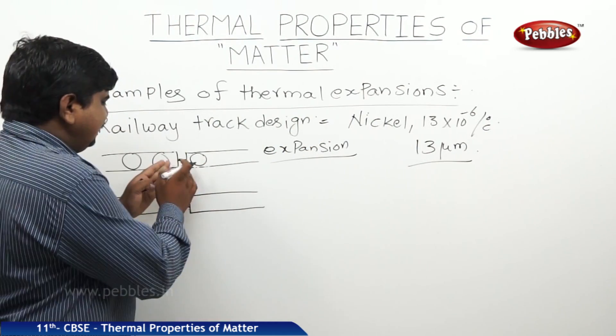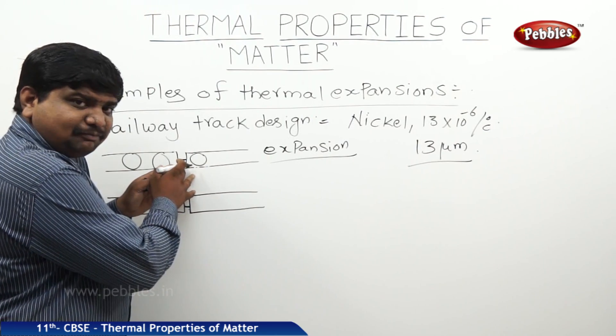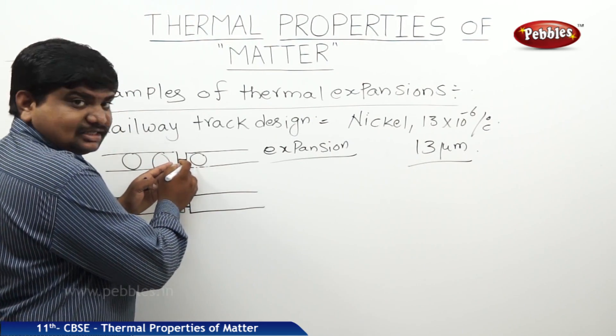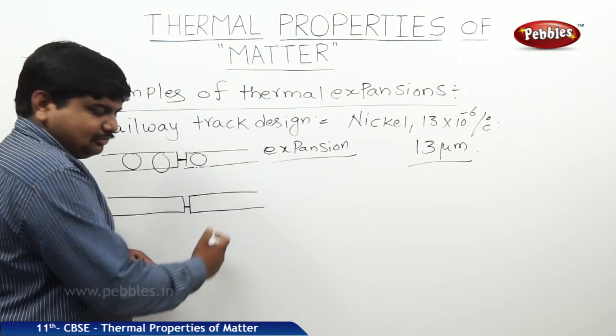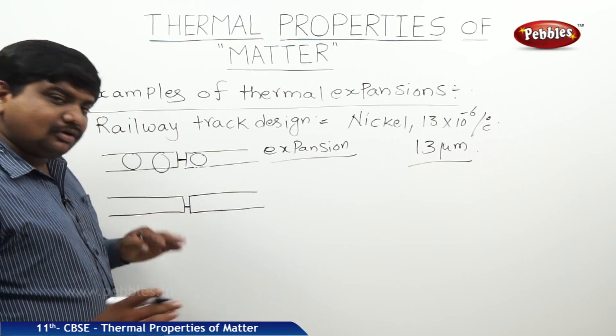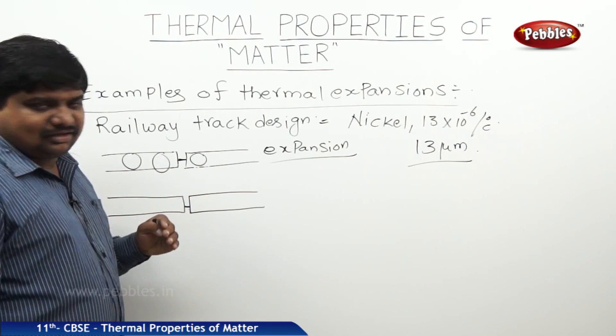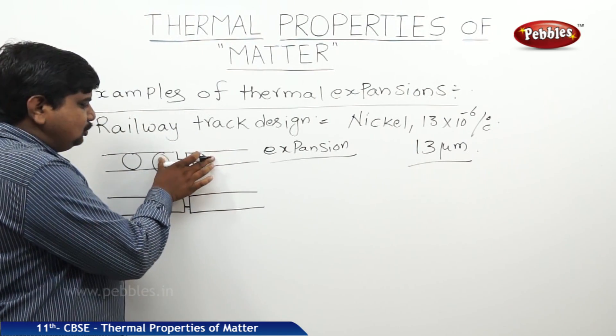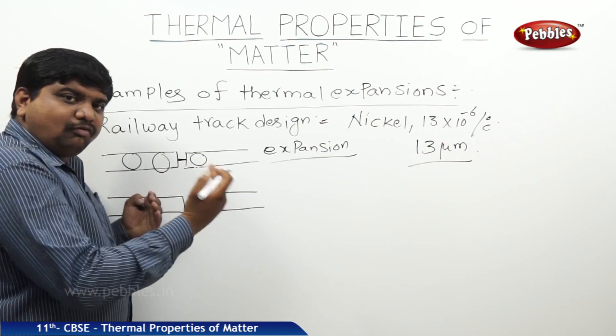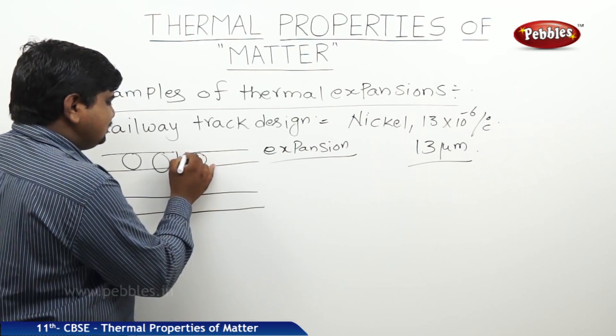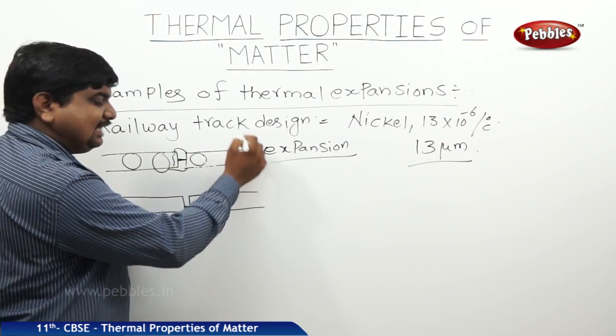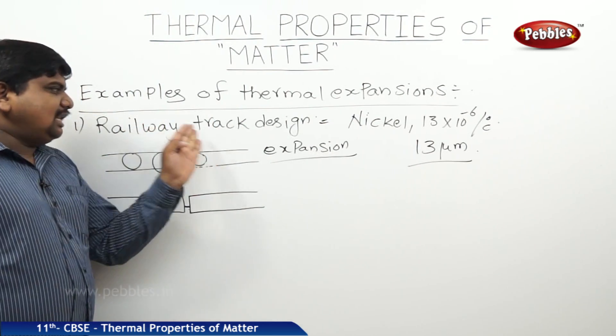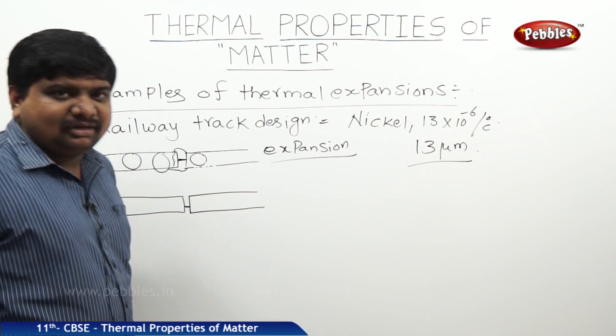Such that, if expansion took place in the summer season, they both will come close. If not, means previously, this gap was not maintained under the construction of the railway track, these two tracks or these two slabs will overlap on each other that causes bending and breaking of the tracks. That's why this railway track designing is based on the thermal expansion.